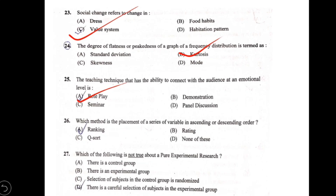Which method is the placement of a series of variables in ascending and descending order? Options: A) ranking, B) Q-sort, C) rating, D) none of these. The placement of variables in ascending or descending order is ranking, option A.